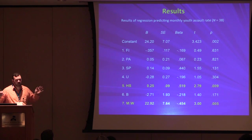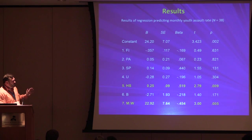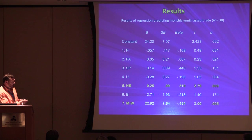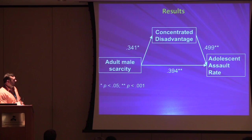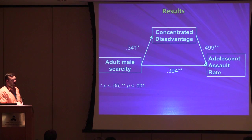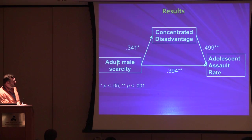I set up a strong test by deconstructing the concentrated disadvantage construct and entering those as individual predictors in a stepwise regression. Only two predictors had a unique contribution to variance: the sex ratio and the proportion of the population with a high school education. But the picture is more complex — adult male scarcity is actually related to many aspects of concentrated disadvantage, so concentrated disadvantage partially mediates the impact of adult male scarcity on adolescent assault rates, with both the direct and indirect paths being statistically significant.